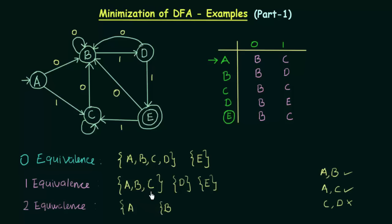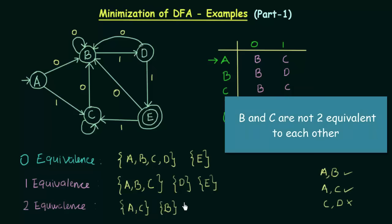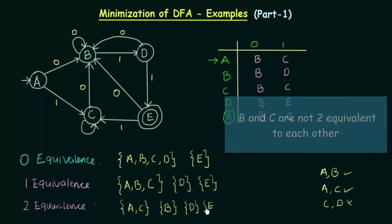Now I check A and C for two equivalence. On input 0, both go to B — same state. On input 1, A goes to C and C also goes to C — same state. So A and C are two equivalent to each other. So the two equivalence row gives us {A, C}, {B}, {D}, {E}.